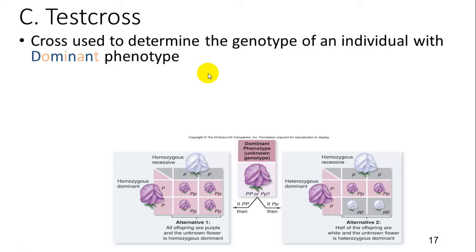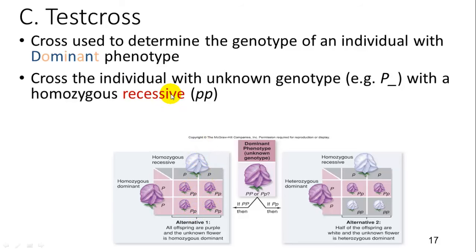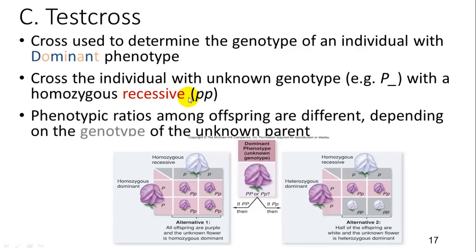A test cross is used to determine the genotype of an individual with a dominant phenotype. If you don't know whether it is heterozygous or homozygous, you cross it with a homozygous recessive. If it's homozygous dominant, all offspring will phenotypically show the dominant trait. However, if it's heterozygous, some offspring will show the recessive trait.